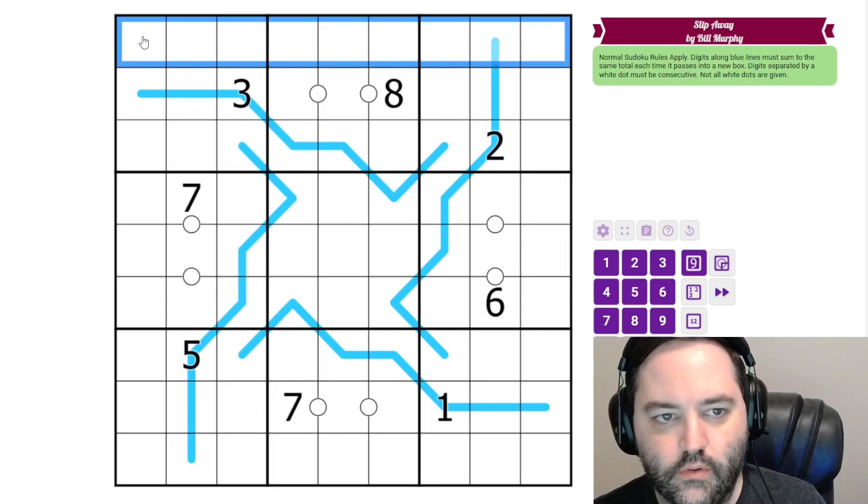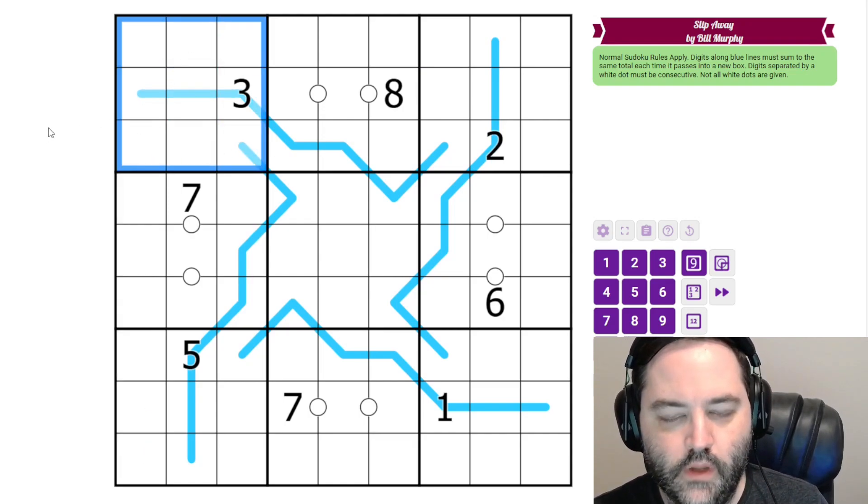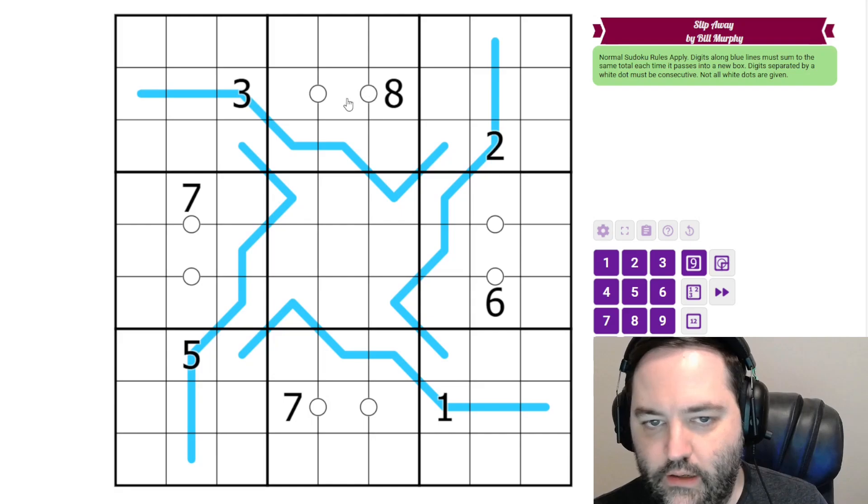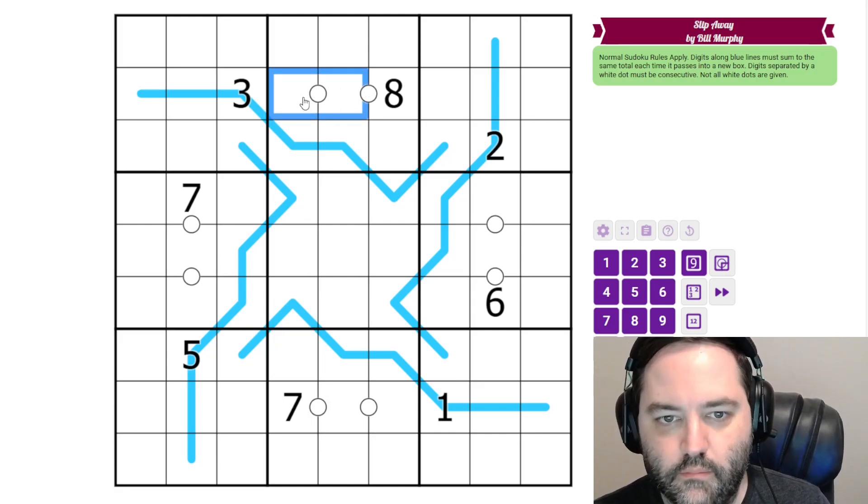So we have normal Sudoku rules, 1 to 9 in each row, column, and 3x3 box. Additionally, we have some white dots in the grid. Digits in cells separated by white dots must be consecutive, so they have a difference of 1.